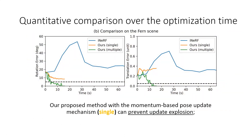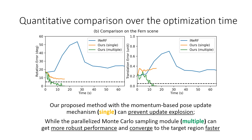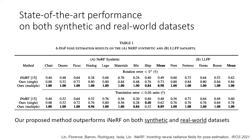As seen from the plot, our proposed method with the momentum-based pose update mechanism can prevent update explosion, while the parallelized Monte Carlo sampling module can achieve more robust performance and converge to the target region faster. Our proposed method outperforms iNeRF on both synthetic and real-world datasets.